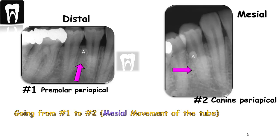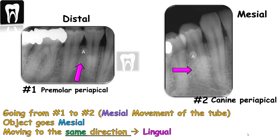Step number five: using the SLOB rule — same lingual, opposite buccal — this shows that the unknown object's image moves in the same direction as the tube moves from one to two, and therefore it is to the lingual of the mandibular first premolar. So the supernumerary tooth is positioned lingually.